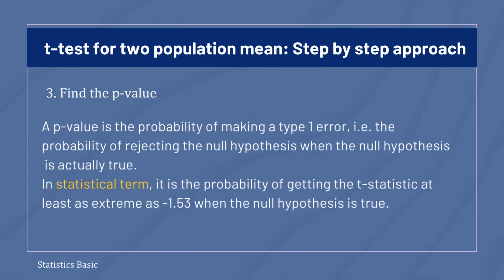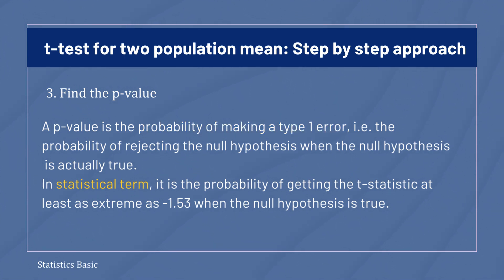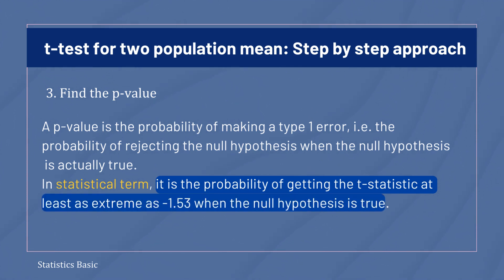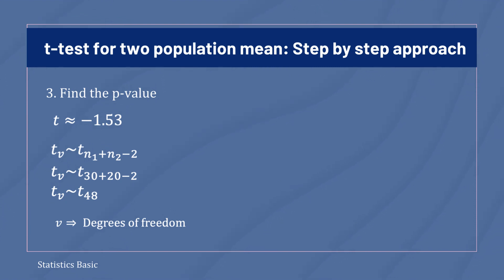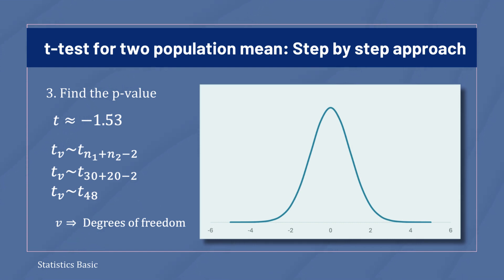Moving on to the third step of the hypothesis test, we need to find the p-value. A p-value is also known as the probability of making a type 1 error — that is, the probability of rejecting the null hypothesis when the null hypothesis is actually true. In statistical terms, it is the probability of getting the t-statistic at least as extreme as minus 1.53 when the null hypothesis is true. In this case, the t-statistic is minus 1.53. The t-statistic follows a t-distribution with 48 degrees of freedom, and the p-value lies on the left tail of the t-distribution because the alternative hypothesis is left-tailed. In the t-distribution plot, the area under the curve on the left side of the t-value of minus 1.53 represents the p-value.